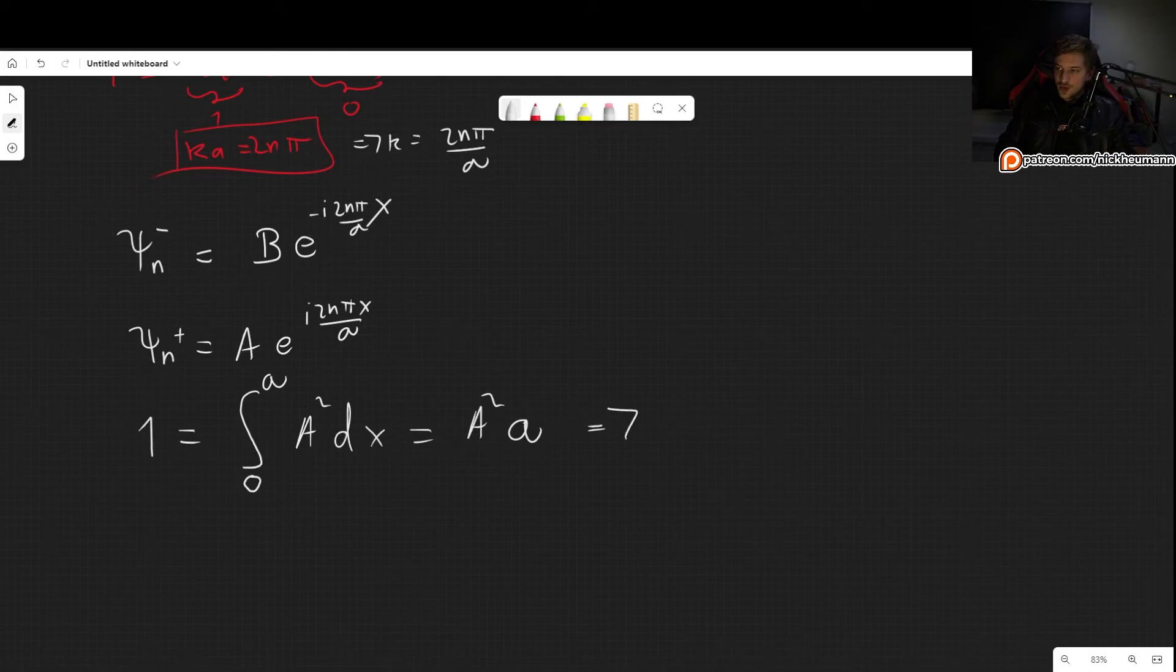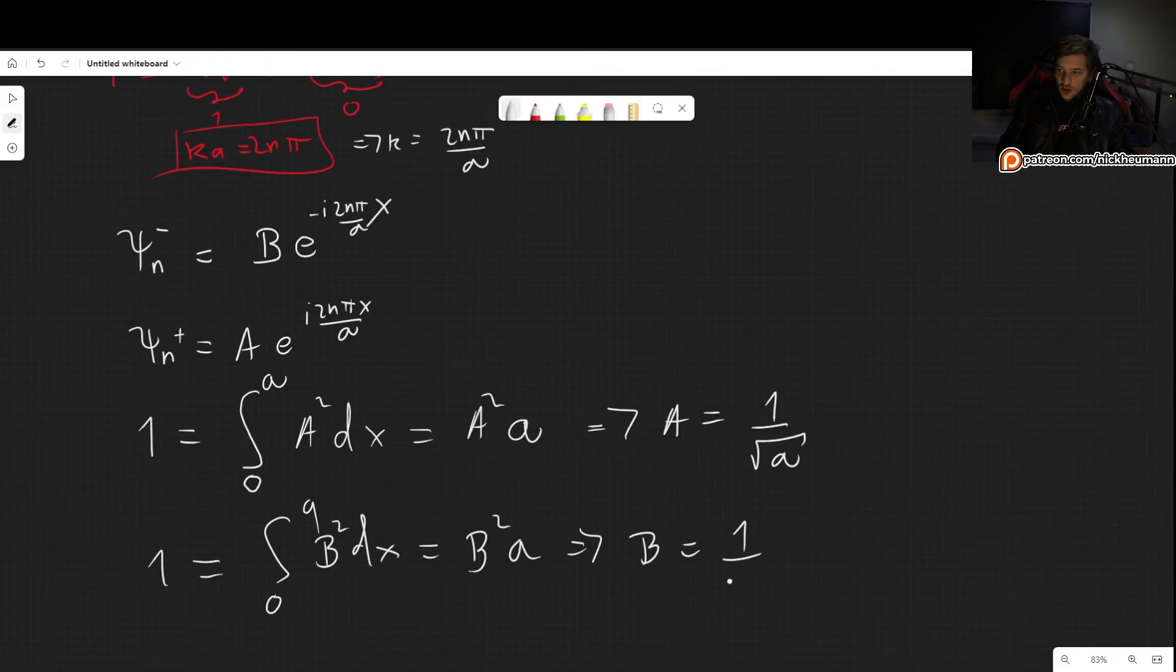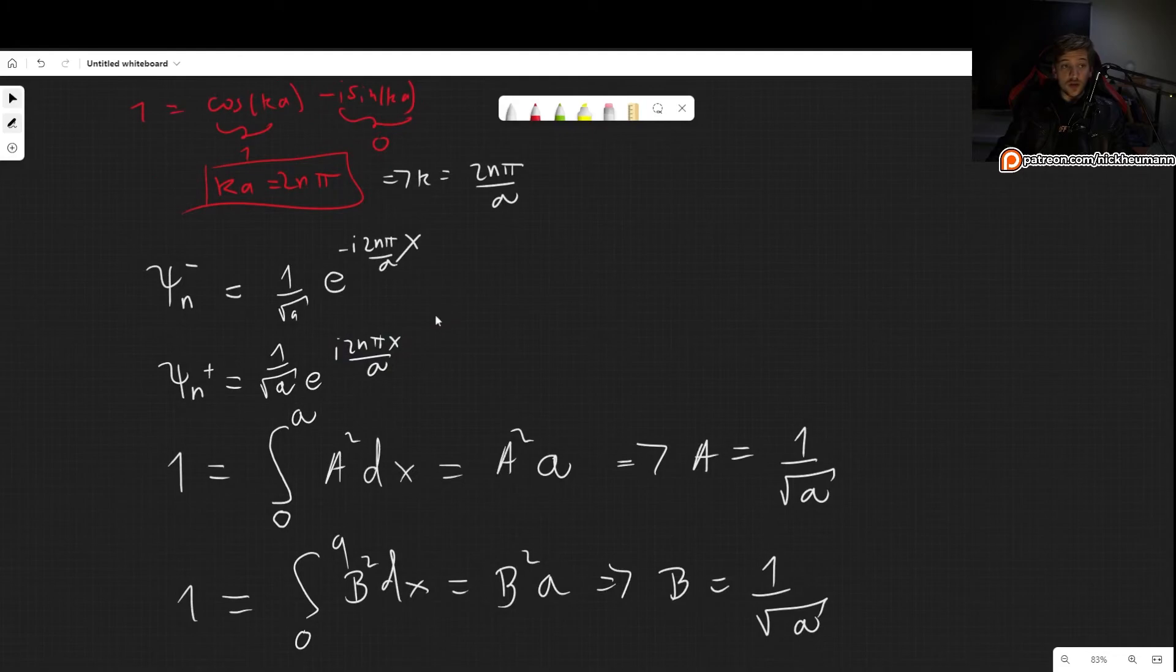So we will get the same when we do this part. From here, we find that A is 1 over the square root of a, and for B it's exactly the same. It interrupts from 0 to a of B²dx, which is B²a, which gives us B is 1 over square root of a. So we simply plug them in: 1 over square root of a for both. And there we have the wave functions.